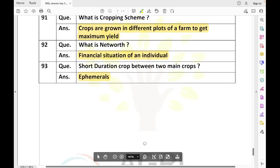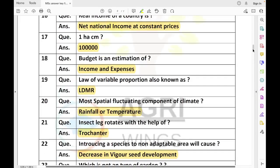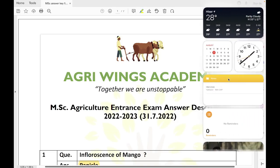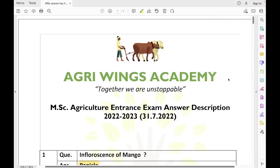Tetraploid wheat, cultivated rice species is Oryza glaberrima in Africa. Fire hazard fertilizer is ammonium nitrate - highly hygroscopic and fire hazard. Cropping scheme is different plots to get maximum yield. Net worth is the financial situation of an individual at a point of time. Catch crop is an emergency crop. CACP - Commission on Agriculture Cost and Prices - recommends MSP to the Government of India. More questions will be added in the comment section.